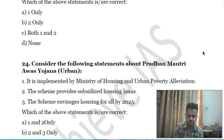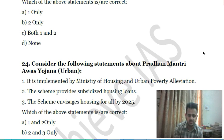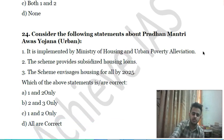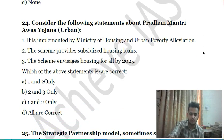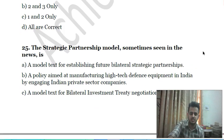Twenty-fourth question: consider the following statements about Pradhan Mantri Awas Yojana — first, it is implemented by the Ministry of Housing and Urban Poverty Alleviation; second, the scheme provides subsidized housing loans; third, the scheme envisages housing for all by 2025. Choose the correct answer.